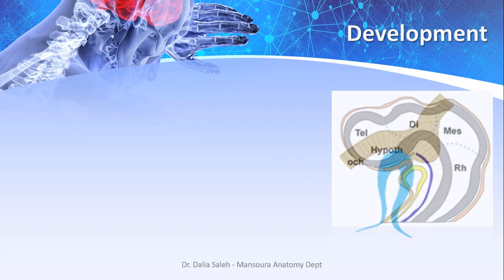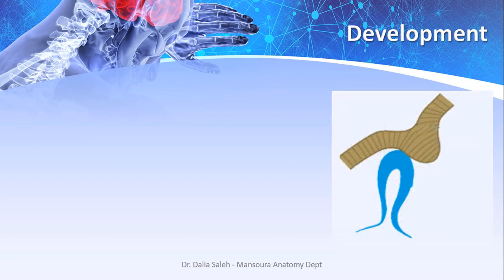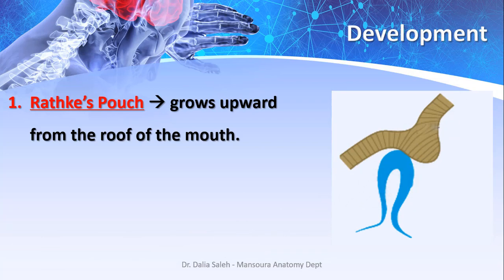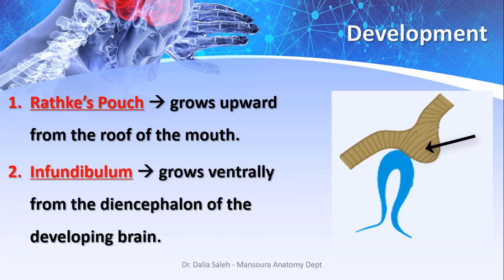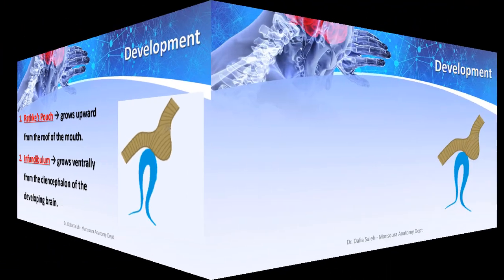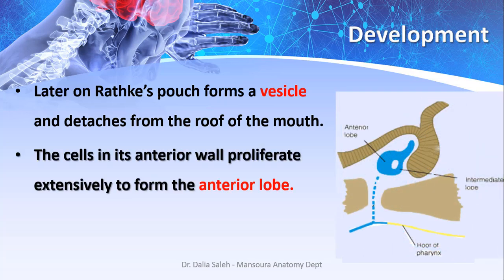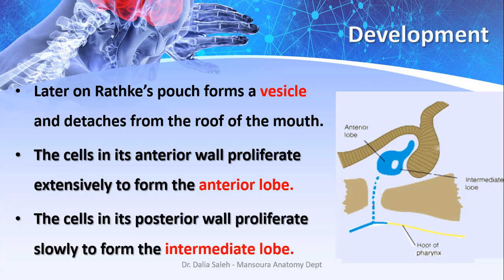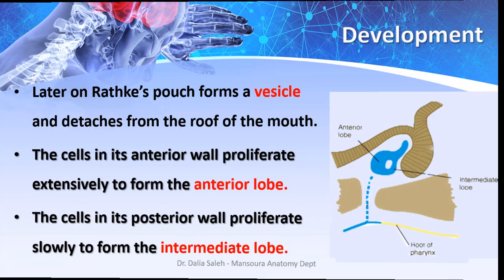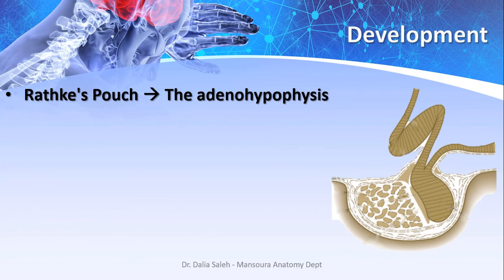The pituitary gland has a dual origin. First, Rathke's pouch, which is an upward growth from the epithelial lining of the roof of the mouth. The other source is the infundibulum, which is a downward growth from the floor of the diencephalon of the developing brain. Later on, Rathke's pouch becomes vesicular and detaches from the roof of the mouth. The cells in its anterior wall proliferate extensively to form the anterior lobe of the pituitary gland, while those in its posterior wall proliferate more slowly to form the intermediate lobe.